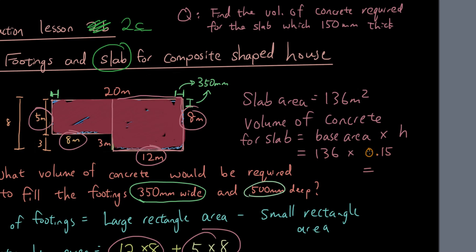So let's put that into the calculator. And the answer is 20.4 meters cubed. That is the volume of concrete required for the slab of the house, so the floor of the house.